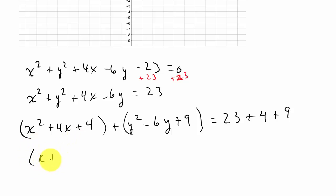From factoring, these are perfect square trinomials. The x group factors into (x plus 2) squared, and the y group factors into (y minus 3) squared. If you need a review on factoring a perfect square trinomial, I have a video on my YouTube channel — search for 'perfect square trinomial' using the search on my channel. The right-hand side equals 36.